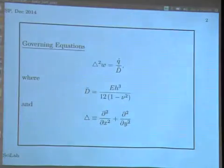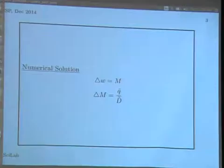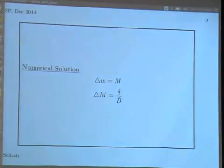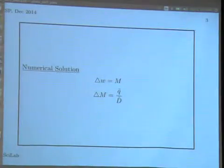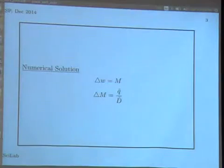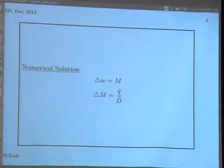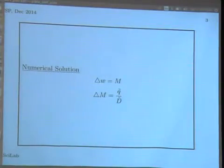For the numerical solution, the bi-harmonic operator was split into two equations: the Laplacian of W is called M, and the Laplacian of M equals Q over D. This splits the fourth-order bi-harmonic equation into two second-order equations. Based on experience, the implementation of boundary conditions is much easier with this splitting — you have two variables W and M, one set of boundary conditions for each. This also gives better numerical accuracy, though analytically one might prefer the single higher-order equation.